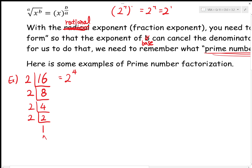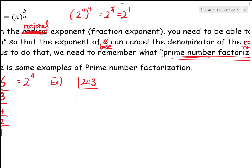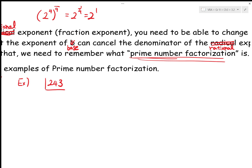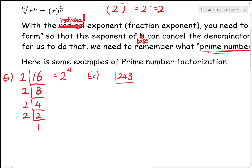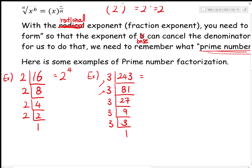Some of you may ask about the 1 — I don't care about it because 1 doesn't change much when multiplied. Now let's do another example: 243. Using the smallest possible prime, 2 doesn't divide 243, so we use 3. Dividing repeatedly: 243 → 81 → 27 → 9 → 3 → 1. We count five 3s in front, so 243 equals 3 to the power of 5.